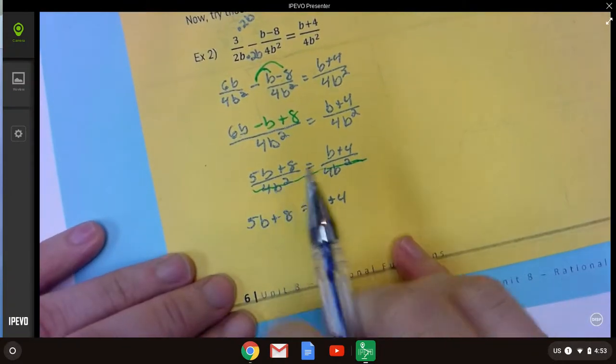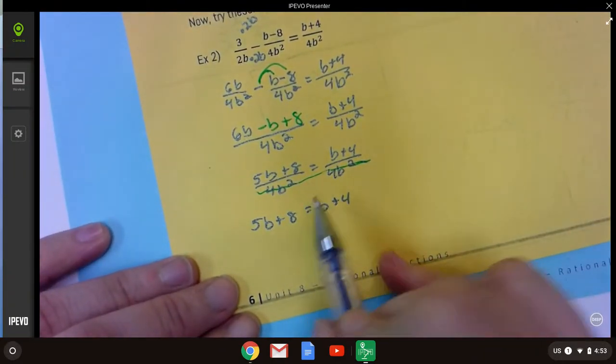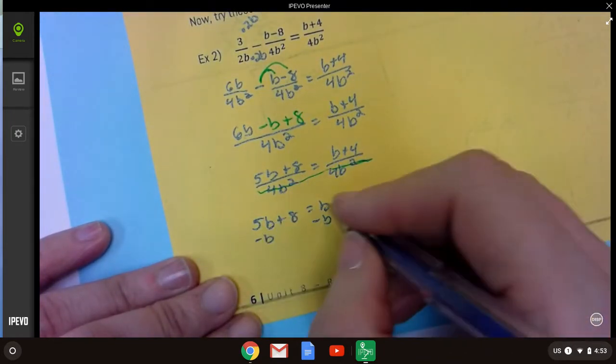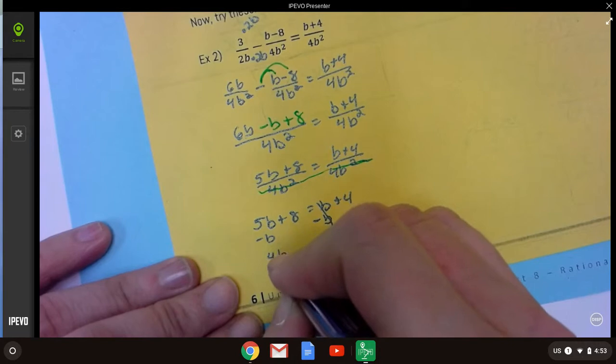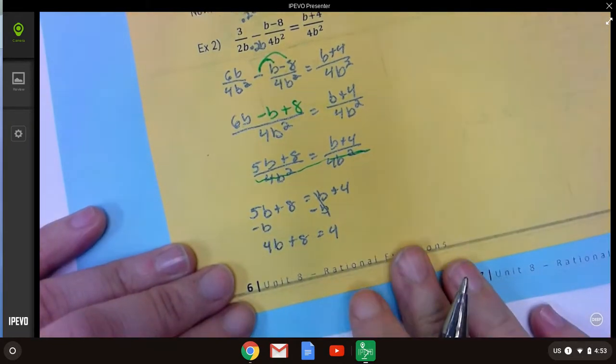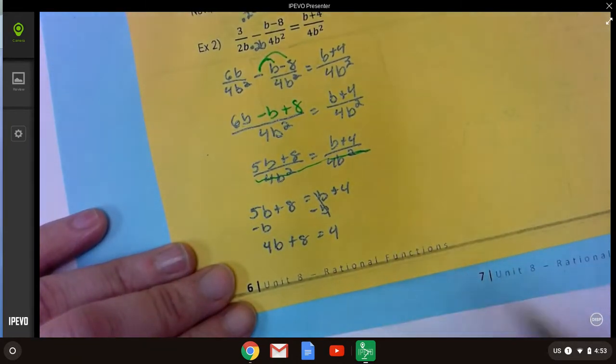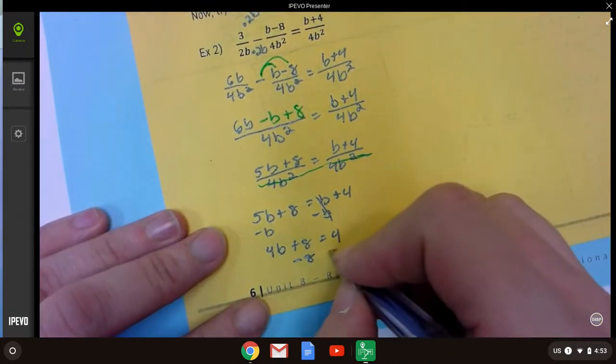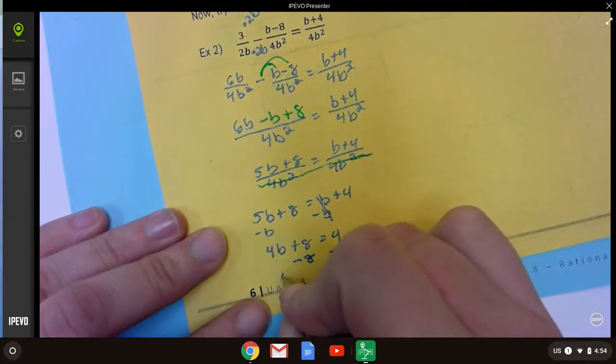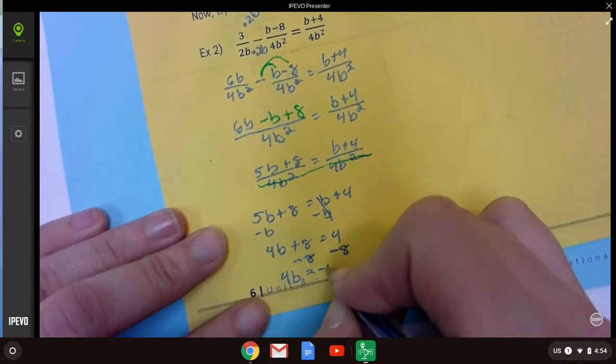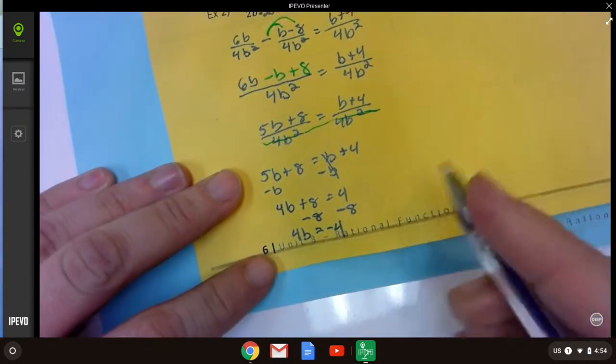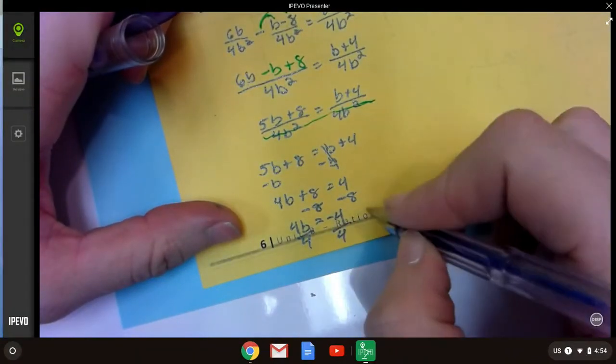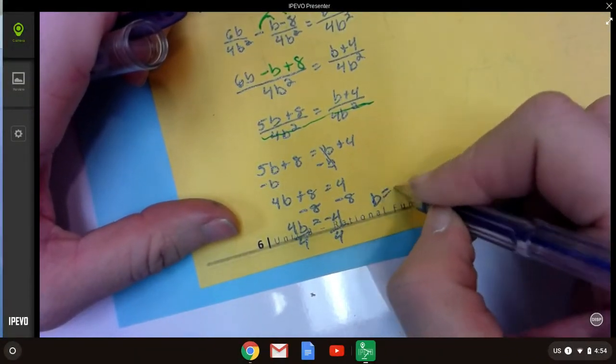So, let's do that. So, 5b plus 8 equals b plus 4. And you could solve this by graphing if you wanted. But, let's just get rid of this b here. When you've got b's on both sides you've got to get rid of one of them. Okay. And then just keep doing reverse PEMDAS the rest of the way. We get minus 8 minus 8, 4b equals negative 4 and then I'm almost out of room. Divided by 4 divided by 4 and we get b equals negative 1.